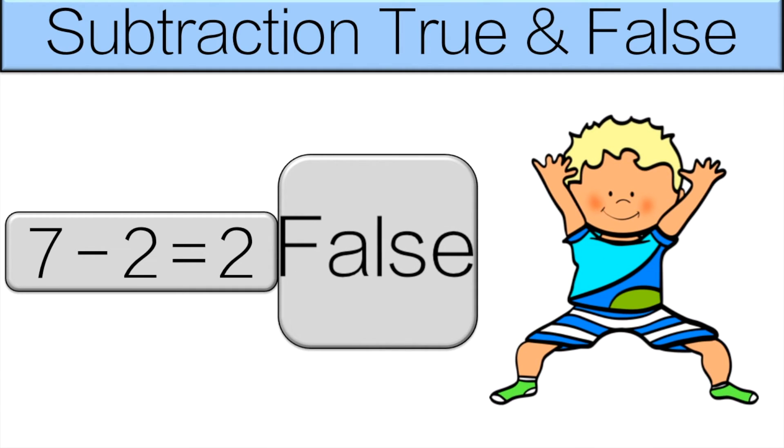This is false. 7 minus 2 is 5. So do the horse pose for 10 seconds.